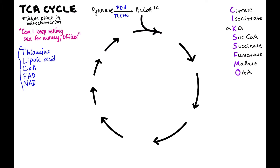In order to start the TCA cycle, we bring acetyl-CoA in and combine it with oxaloacetate — the last in our mnemonic. Oxaloacetate has four carbons, so when we combine these two things together we get citrate, a six-carbon molecule. The enzyme responsible for this is citrate synthase.